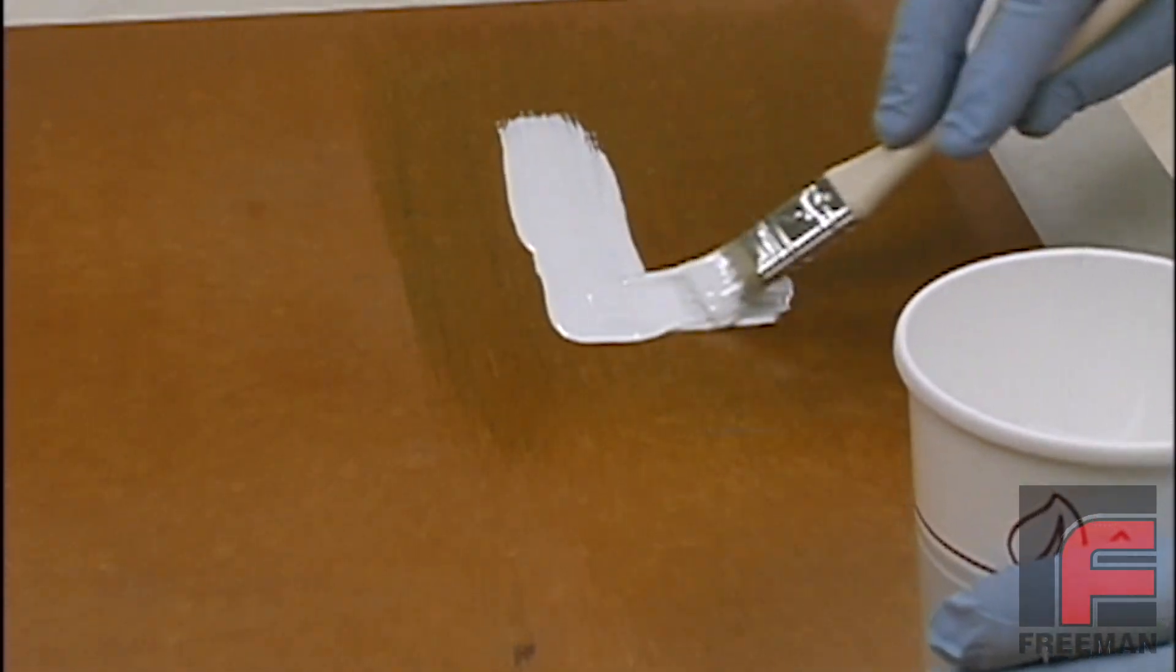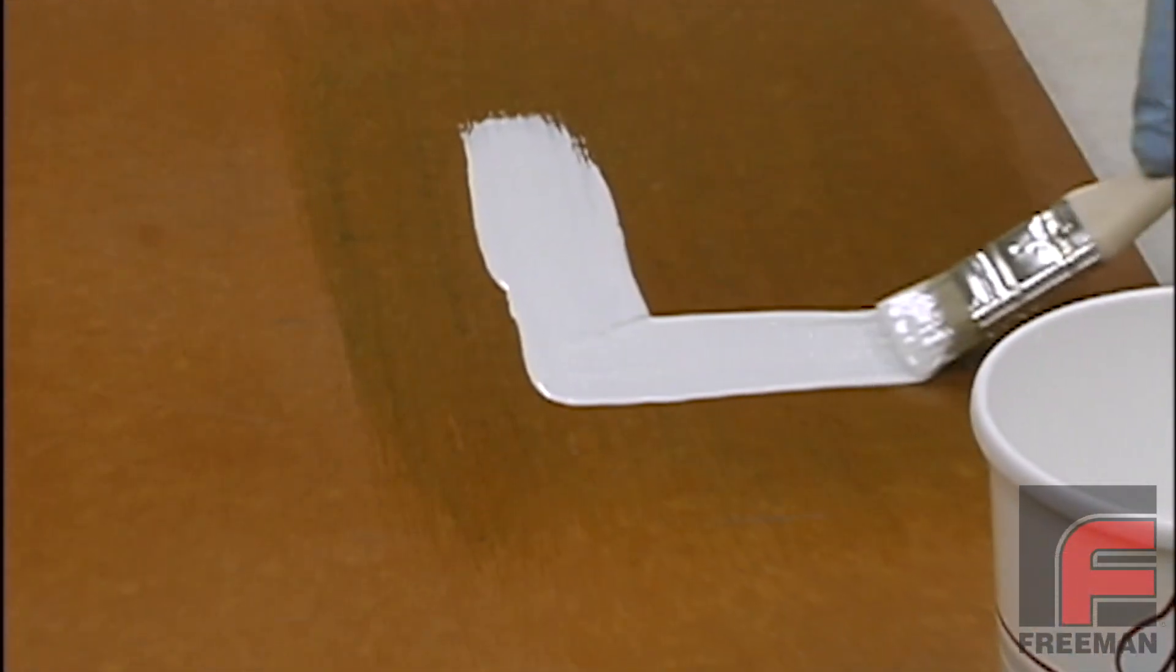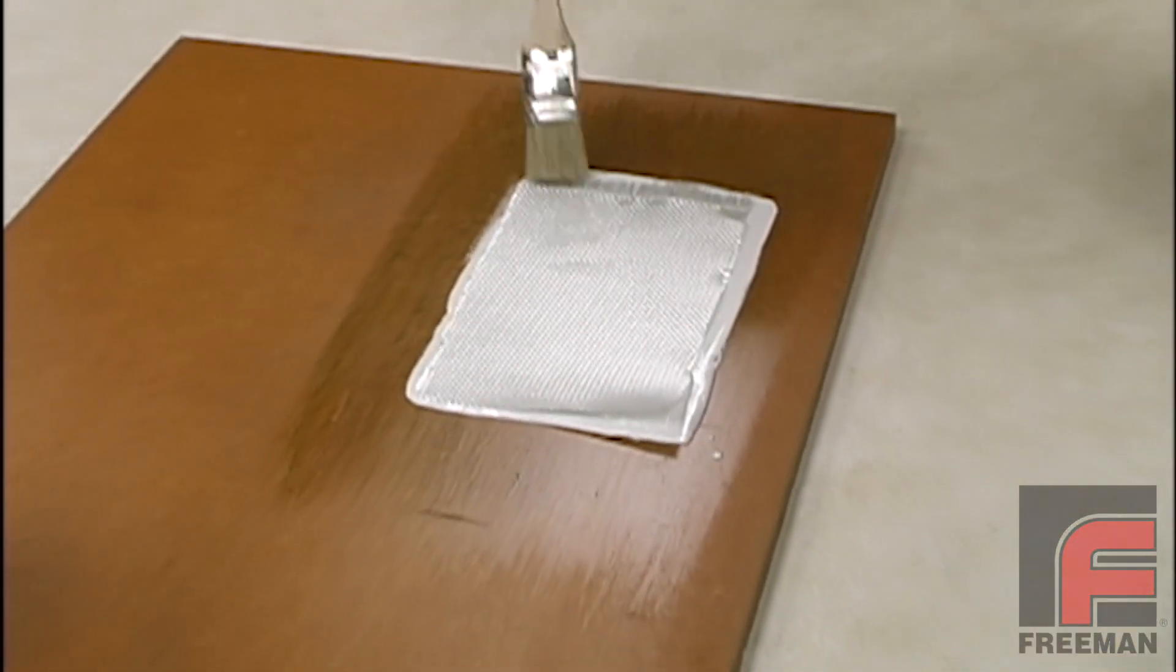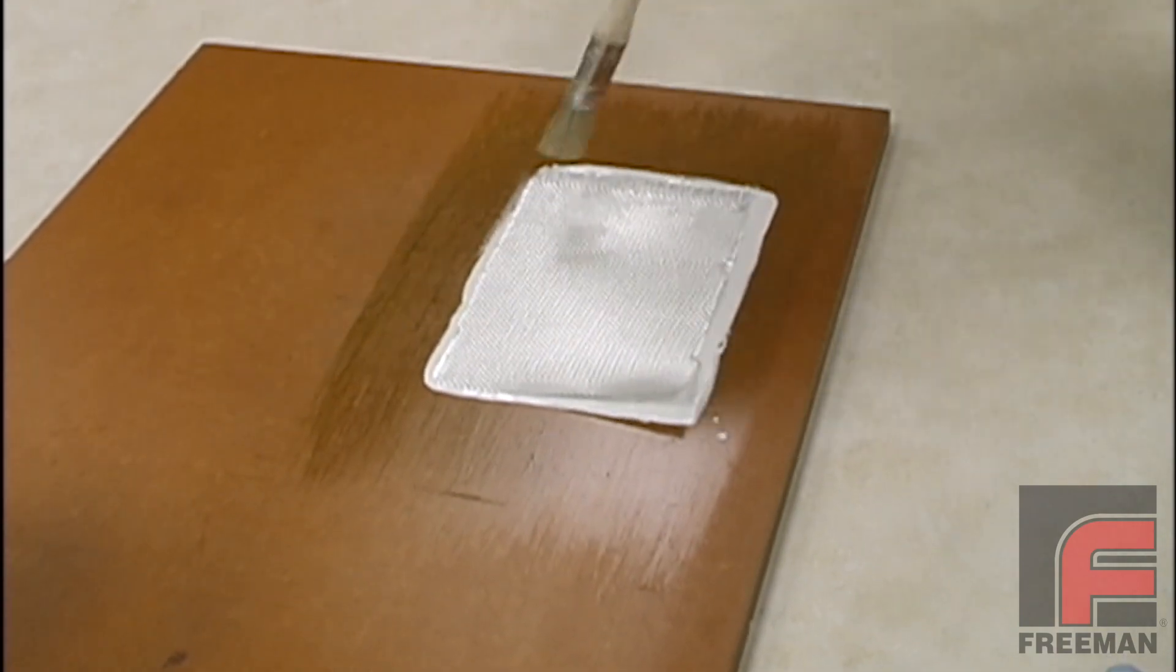Since mass casting methods are only practical for smaller tools because of factors such as weight, cost, and shrink, larger tools and molds are most commonly constructed with fiberglass reinforced epoxy.